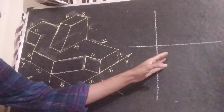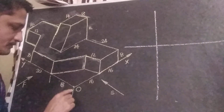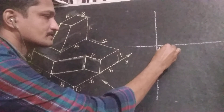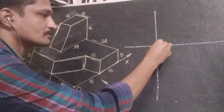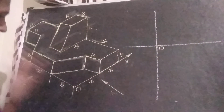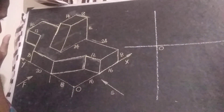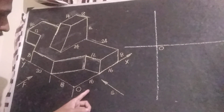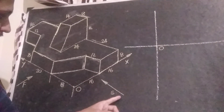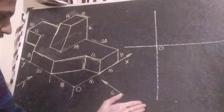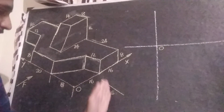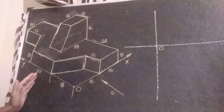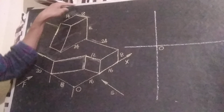In orthographic view, this point will become the origin. We must draw the side view — that means the right side view — then the front view, then the top view.